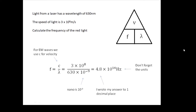So there's my triangle: V equals F lambda, so F equals V over lambda. Note that for electromagnetic waves, for light, we use the symbol C — C is the speed of light, 3 times 10 to the 8. So my equation becomes 3 times 10 to the 8 divided by 630 times 10 to the minus 9, because nano is 10 to the minus 9. I work it out on my calculator and get 4.8 times 10 to the 14 hertz.